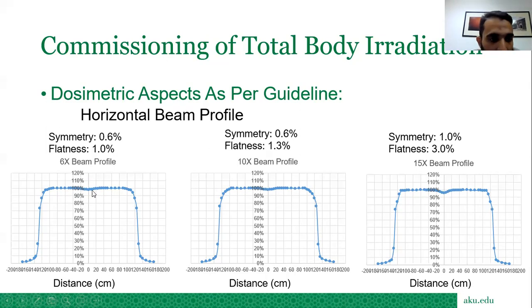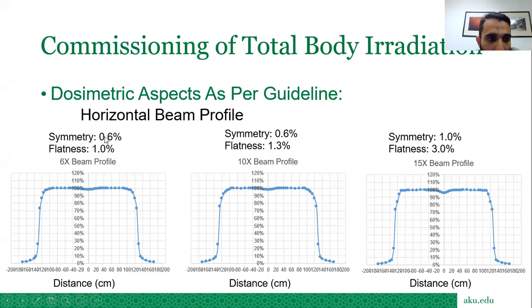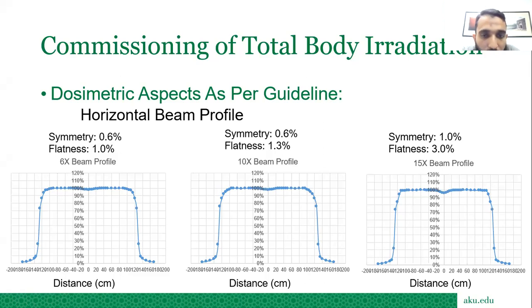The horizontal beam profile results: for 6X, flatness was 1% and symmetry was 0.6%; for 10X, flatness was 1.3% and symmetry was 0.6%; for 15X, flatness was 3% and symmetry was 1%. The 15X showed higher flatness deviation.